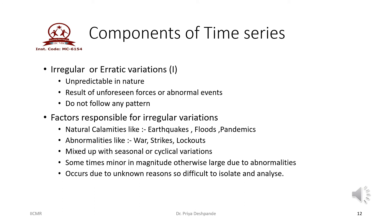The fourth and last component of time series is irregular or erratic variations. These variations are unpredictable in nature — one cannot predict before the variation occurs. Unforeseen forces or abnormal events create great variation in the values of the variable in the time series and do not follow any specific pattern. Factors responsible include natural calamities like earthquake, flood, and pandemic — for example, COVID-19 has brought down the economy of the entire world. Abnormalities like war, strike, and lockouts also cause changes. Sometimes these irregular variations mix up with seasonal and cyclical variations and create great loss to the economy.